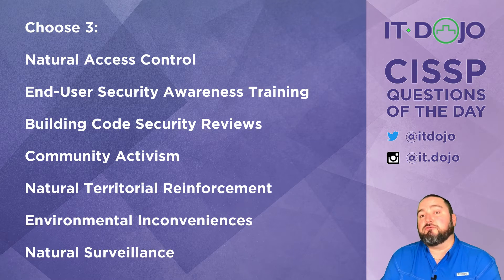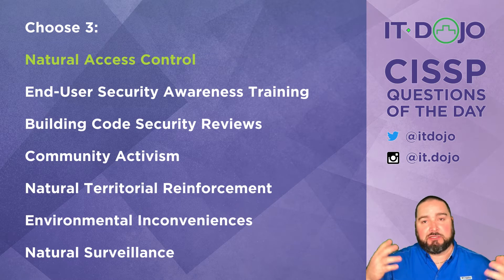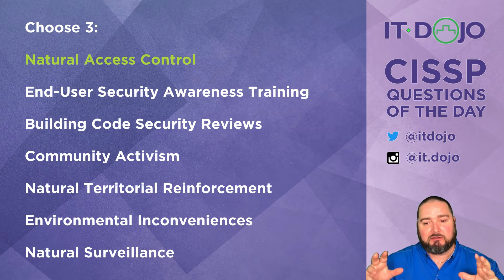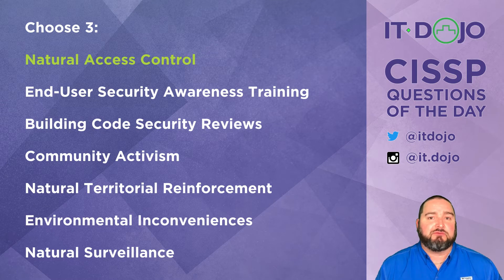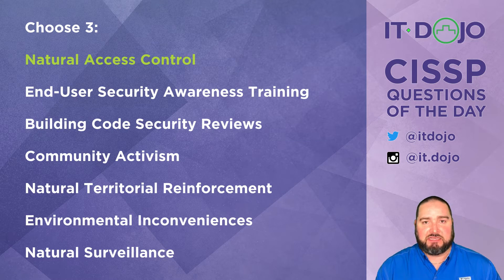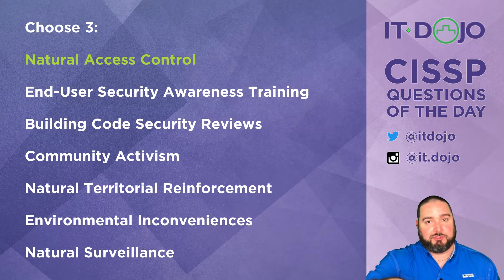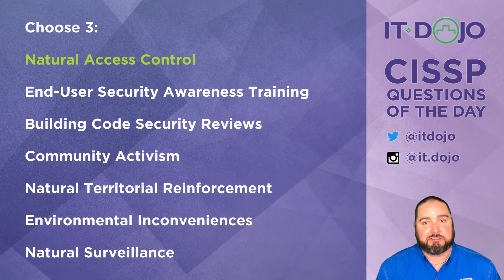The first answer you're looking for is natural access control. Natural access control endeavors to clearly delineate or define the difference between public and private space in an area. It does this by using lighting and fencing, landscaping, and things of that nature to signal to people that this is a public place where you can go, and over here is a private place — don't go there.